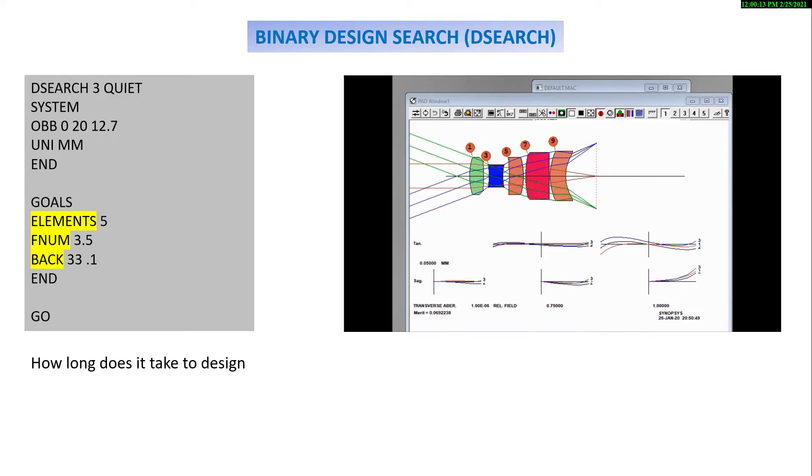The first category of automatic design tools is based on the binary search algorithm. Say you're going to design a system with five elements, with an F number of 3.5, and a back focal length of 33. How long will it take?